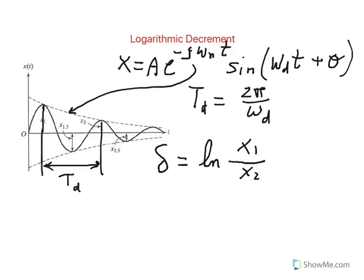Now, if we go through the determination of delta, the whole idea is: can we describe delta in terms of zeta, the damping ratio, and eventually write zeta in terms of delta? You'll see later on in an example how this is very convenient in design — very useful for, say, a suspension system of a car.